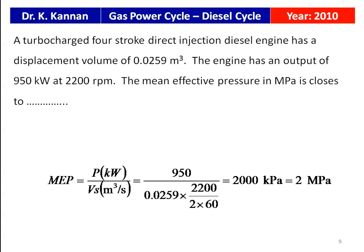The power is given as 950 kW and the swept volume must be converted to m³/s. Multiplying by 2200 RPM divided by 2 × 60, the factor of 2 accounts for a 4-stroke cycle engine where there is only one suction stroke per cycle. Therefore 2200 divided by 2 × 60 gives a mean effective pressure of 2000 kPa, which equals 2 MPa. So the answer is 2 MPa.